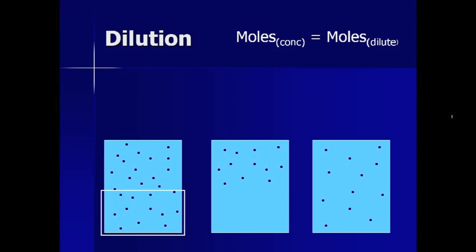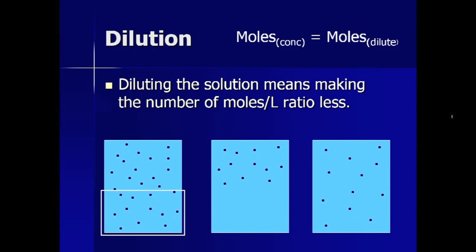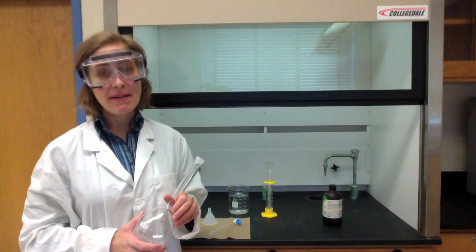Look at the same volume of each container. The one on the right has fewer particles in solution per unit volume. To get moles, we need to multiply molarity by the volume. Since we want the moles to be the same, we can use this equation, M1V1 equals M2V2, to figure out the desired volume of concentrated acid we need to make our dilute solution.